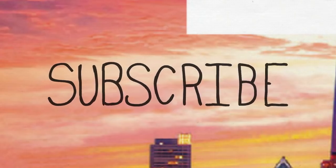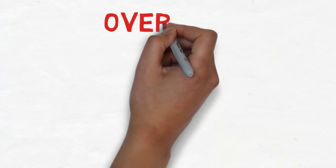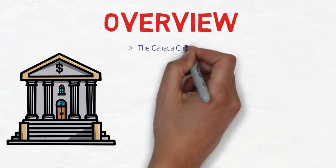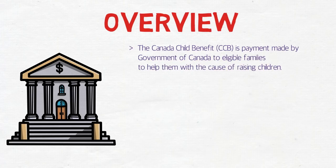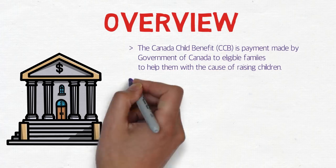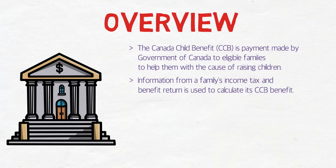Let's talk about the overview of this program. The Canada Child Benefit, or CCB, is a payment made by the government of Canada to eligible families to help them with the cost of raising their children. Information from a family's income tax and benefit return is used to calculate the CCB benefit, so not everyone gets the same amount — it depends on the family's income tax.